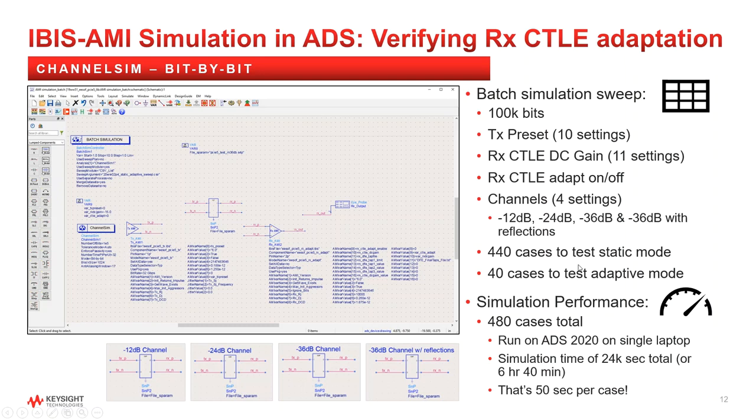For testing adaptive CTLE mode, we only need to sweep the 10 transmit presets across the 4 channels, so now only 40 cases. So it's 440 cases versus 40 cases.